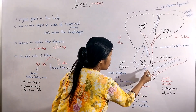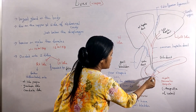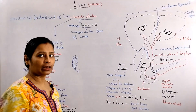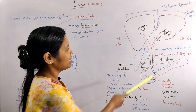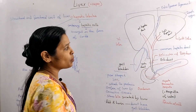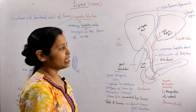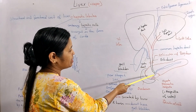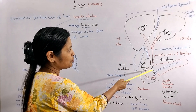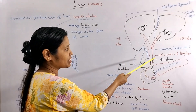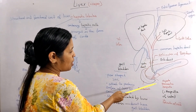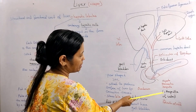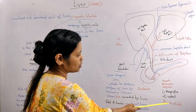This ampulla opens into the duodenum. Remember, at the point where the bile duct meets the pancreatic duct, there is a structure called the sphincter of Oddi, which controls the flow of bile and pancreatic juice into the duodenum.